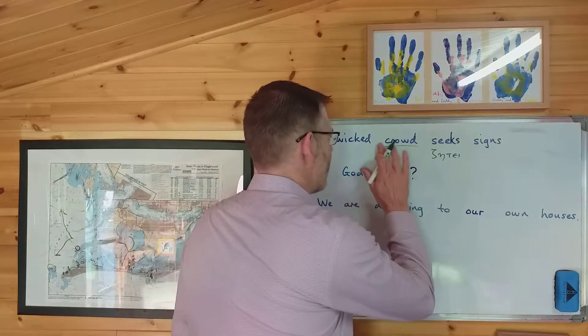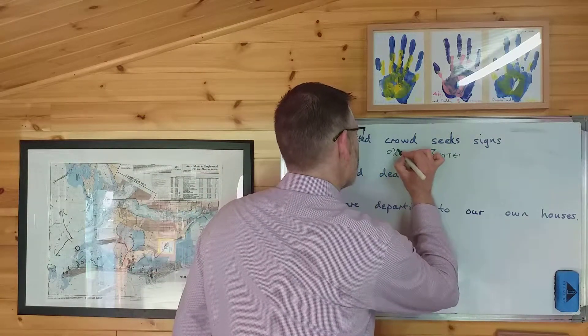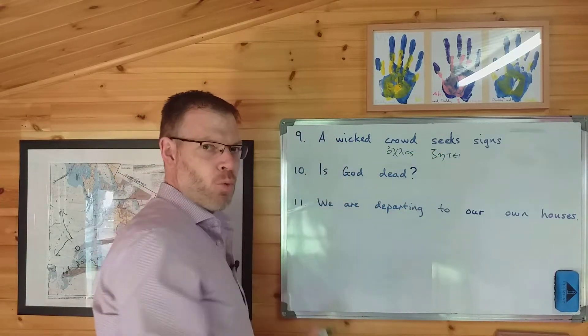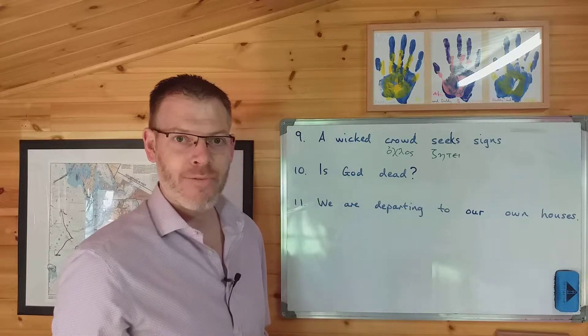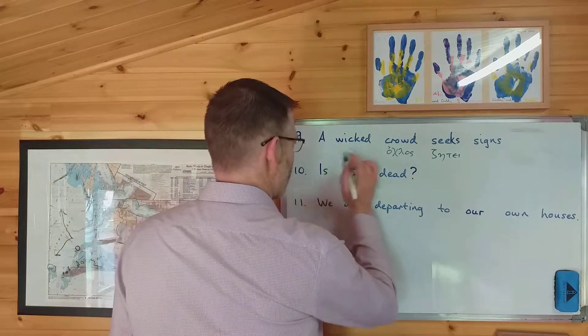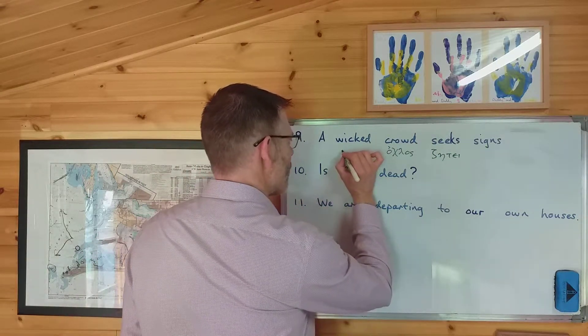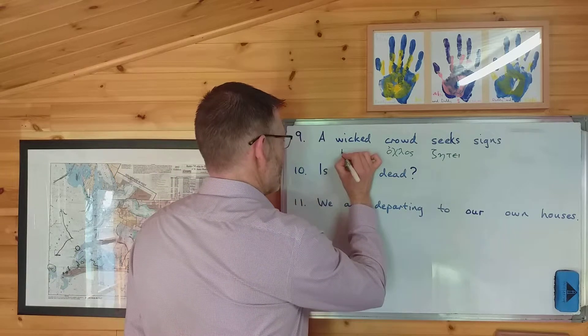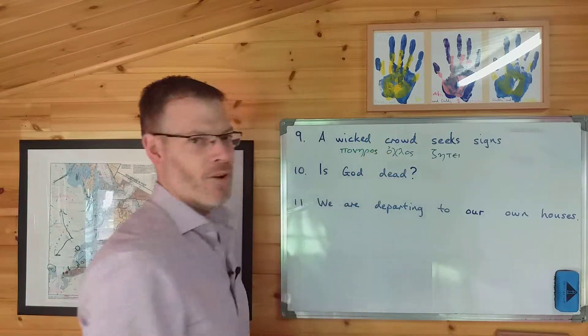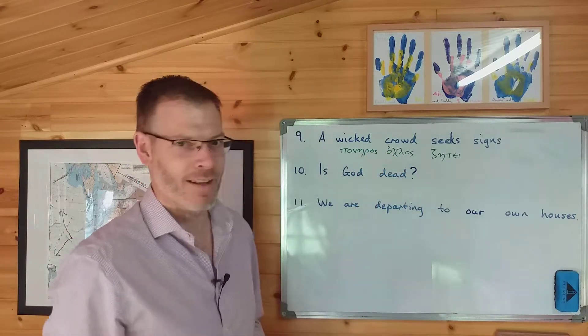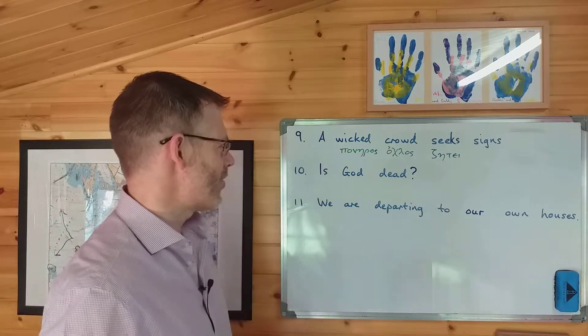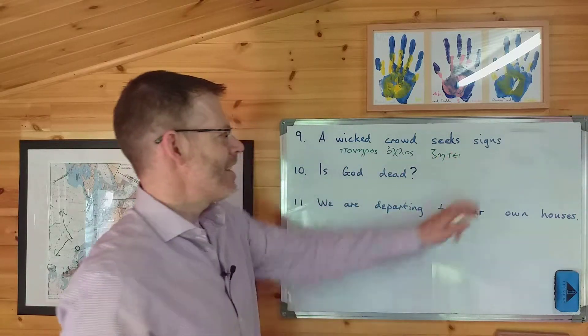So you've done the verb, now translate the subject. Well, the subject is a wicked crowd. Let's do the noun first. Do the noun before the adjective, just makes it a bit easier. It wants to be in the nominative singular, and that is ochlos. And then, wicked. Well, we don't need the article, we just need the adjective, wicked, and that can go before or after ochlos. But let's pop it before, because it's just the same as in English. And the word for wicked is poneros.